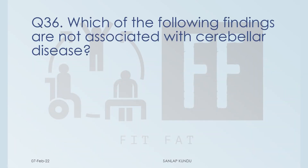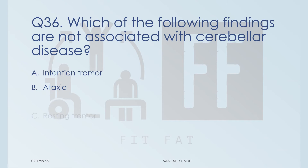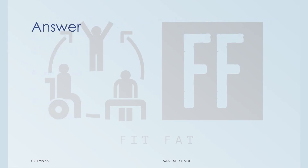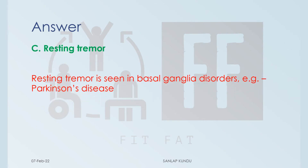Question number 36: which of the following findings is not associated with cerebellar disease? Options: A) intention tremor, B) ataxia, C) resting tremor, D) dysmetria. The answer is option C, resting tremor, because resting tremor is seen in basal ganglia disorders such as Parkinson's disease.